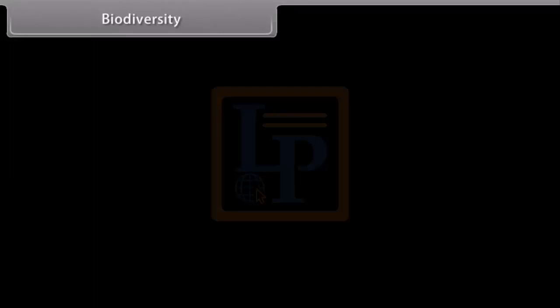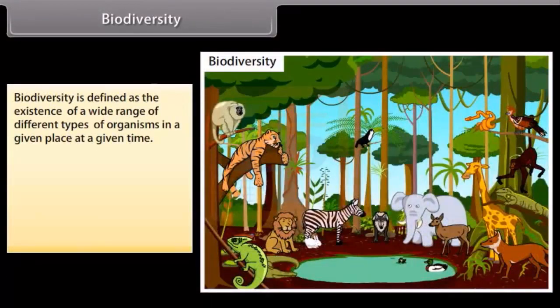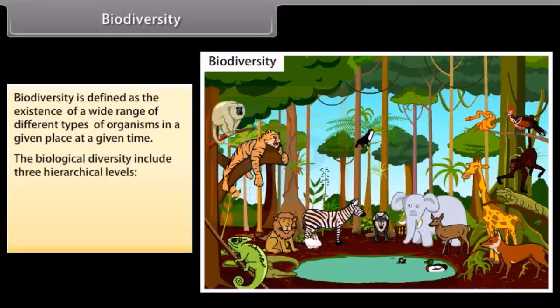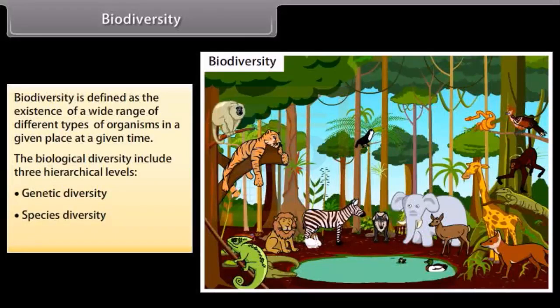Biodiversity. Biodiversity is defined as the existence of a wide range of different types of organisms in a given place at a given time. The biological diversity includes three hierarchical levels. They are genetic diversity. Let's know more about them in detail on our next screen.